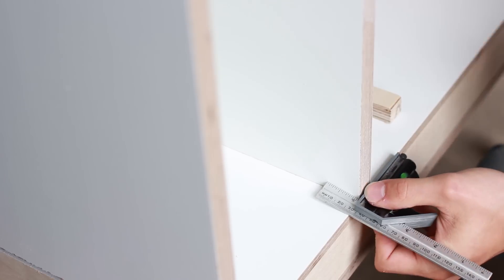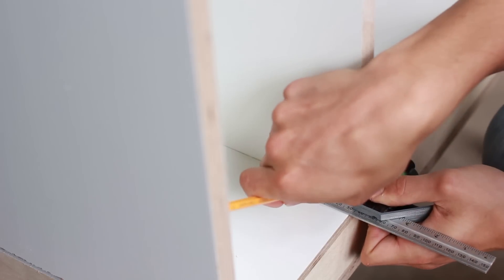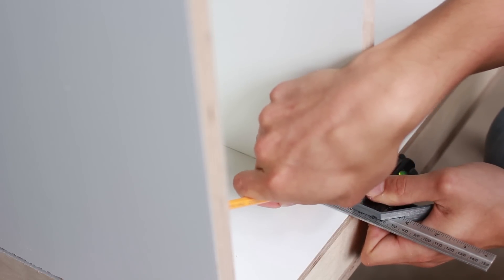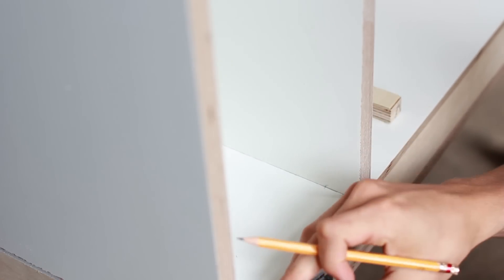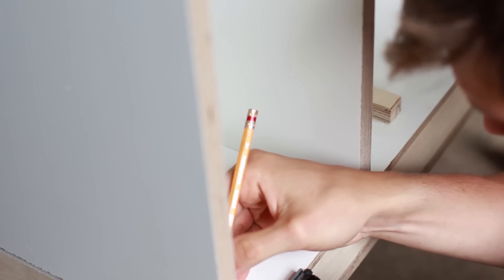To account for slight variances in the width of the panels I placed them in the dados and flushed the front edge with the front of the torsion box. Then, referencing off the back edge of the torsion box, I made a mark on both the panel and the top of the base at 32mm in from the edge. This marks the front edge of the dado for the back panels.